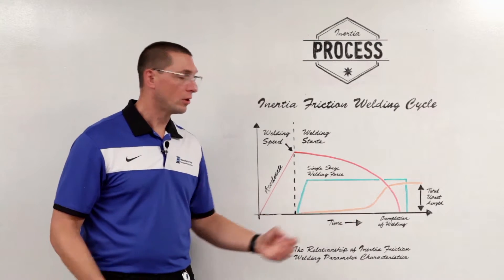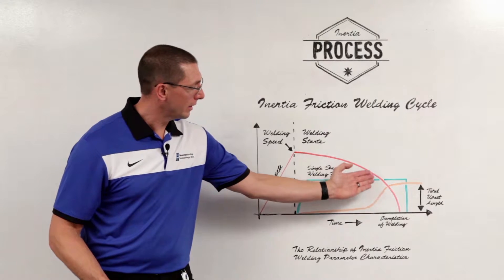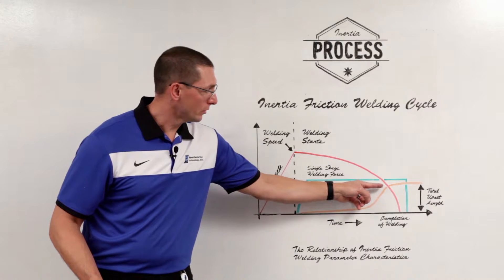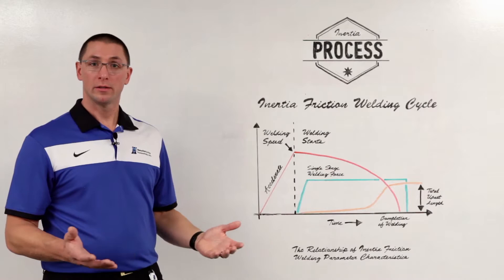That material shortening is called upset, represented by the orange line. So as we convert this kinetic energy into heat, our parts warm up, they start to extrude and shorten. Once all the kinetic energy has been dissipated, the weld is complete.